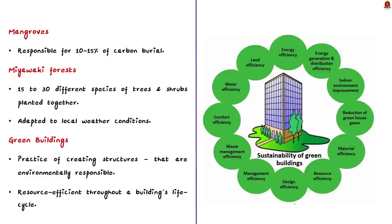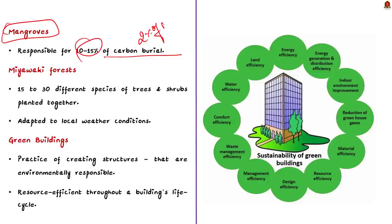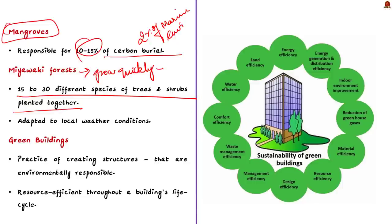The fifth project is mangroves, which are especially important in a flood-prone city like Chennai. Mangroves are responsible for 10–50% of carbon sequestration despite making up less than 2% of the marine environment. The sixth project is Miyawaki forests, which grow much more quickly than conventional forests. In this method, 15–30 different species of trees and shrubs are planted together; this plant community is perfectly adapted to local weather conditions.